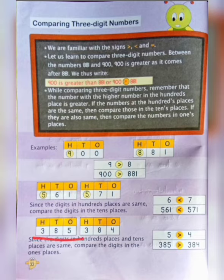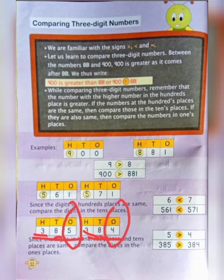Next: 385 and 384. First we compare the hundreds place — that is the same. Then the tens place — they are also the same. Then we move to the ones place: 5 and 4. You can see here, 5 is greater than 4, so our answer will be greater than.